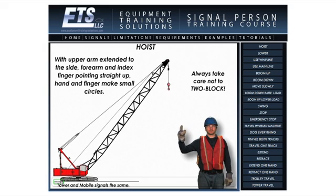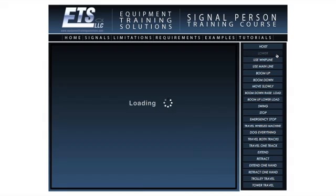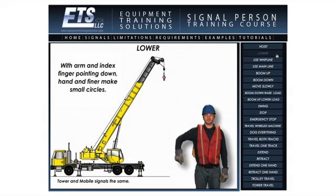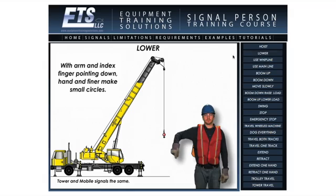If at the end of the video you wish to view it again, you may do so by clicking the play button. When you are finished with this demonstration, simply select another signal from the list on the right-hand side of the screen. When you have completed and have comfortable knowledge of all 22 standard hand signals, you may move on to another section of the program by selecting another button from the main menu bar.